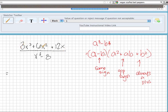It looks like all of these terms have a 3 and an x in common. So let's go ahead and factor out a 3x, and what we are left with on the inside would be x squared plus 2x plus 4.